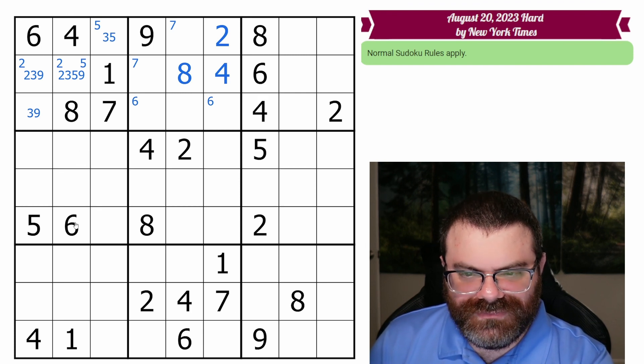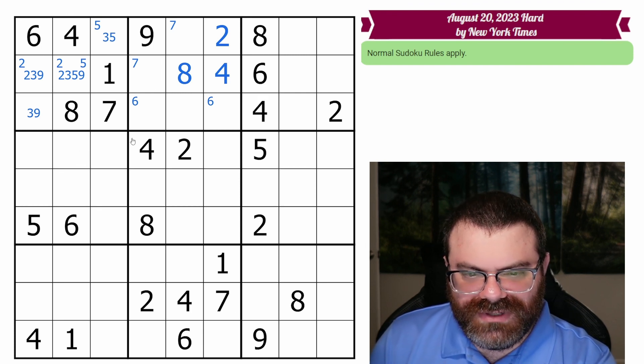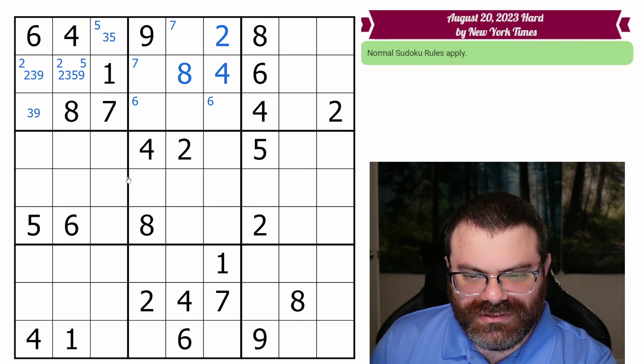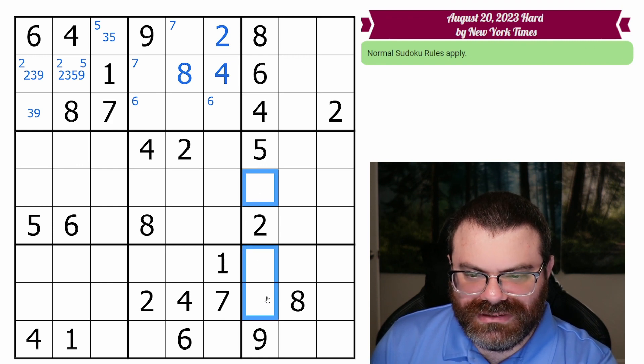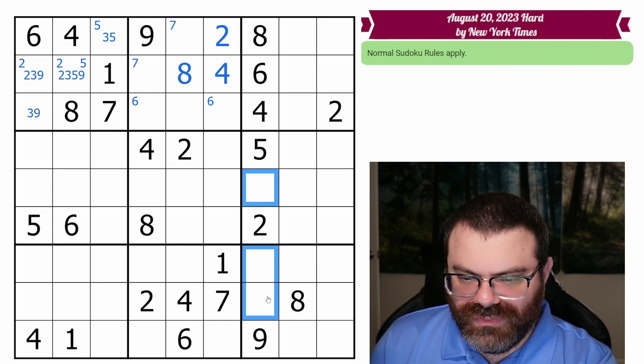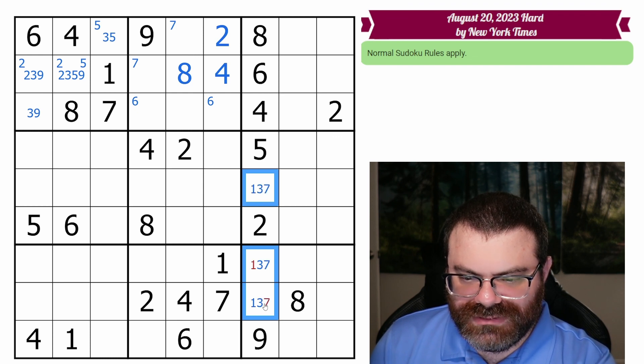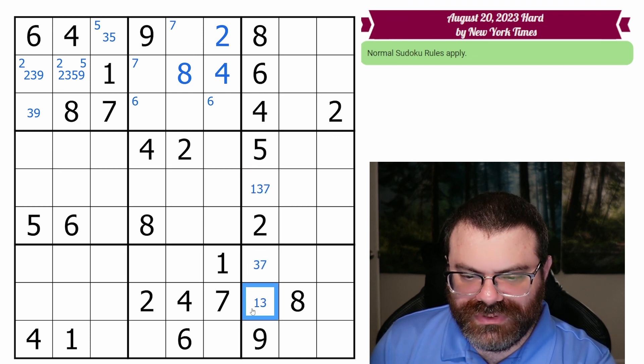I mean, everything's going to have three as an option if we don't have any threes on the grid. So we're going to have to find a naked single or something along those lines. This column I noticed has three digits left. Obviously, three is one of them. We need a one. We need a three. And we need a seven. Okay, that unfortunately doesn't do anything.